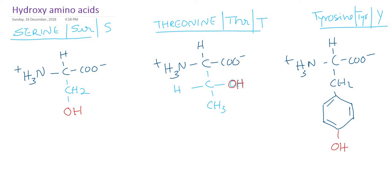What are the common things between these three amino acids? They all contain a hydroxyl group — that is why they are called hydroxy amino acids. Serine and threonine are both glucogenic amino acids. When their carbon skeletons undergo complete oxidation, they give glucose or intermediates of the citric acid cycle.